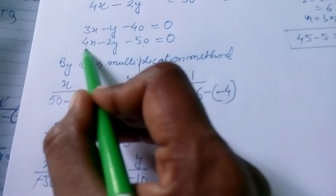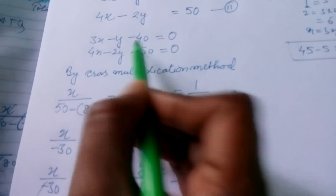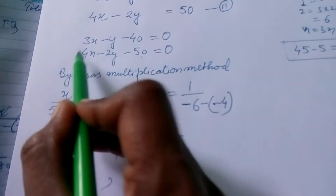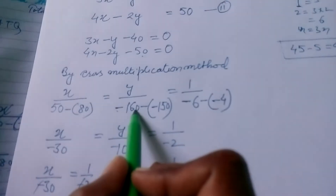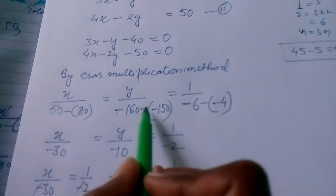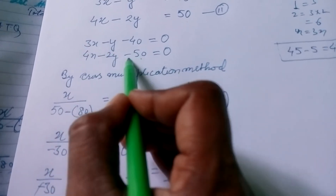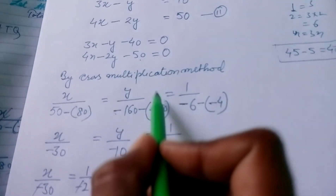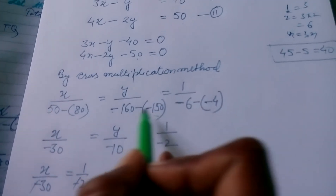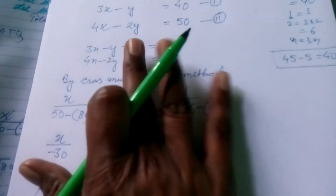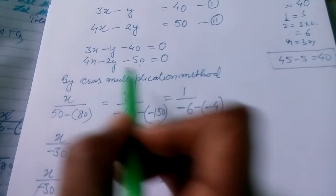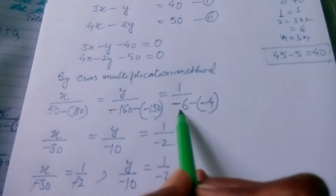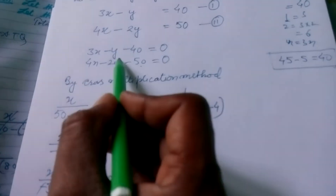For Y, ignore the Y column and cross multiply: (−40)(4) − (−50)(3) = −160 − (−150) = −160 + 150 = −10. For the constant term, ignore the constants: (3)(−2) − (−1)(4) = −6 − (−4) = −6 + 4 = −2.